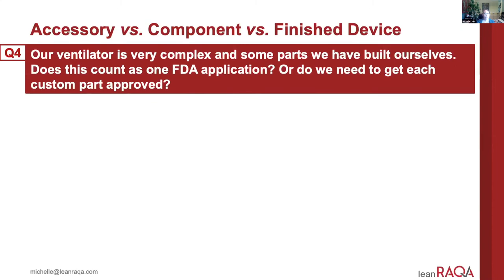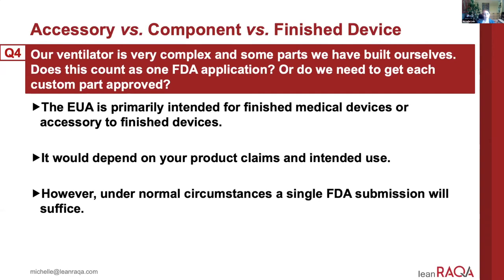Question: Our ventilator is very complex and some parts we built ourselves. Does this count as one FDA application or do we need to get each custom part approved? The EUA is primarily intended for finished medical devices or accessories to finished devices — as are other FDA applications outside the EUA. Under normal circumstances, such as a 510K, a single FDA submission will suffice because those parts are part of your whole and not individual medical devices being sold separately.